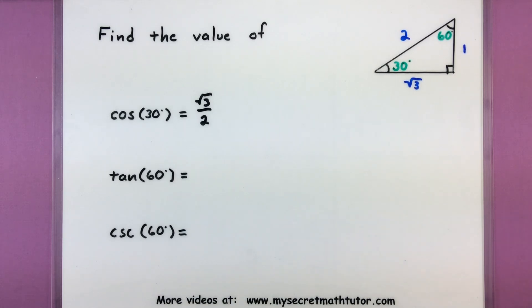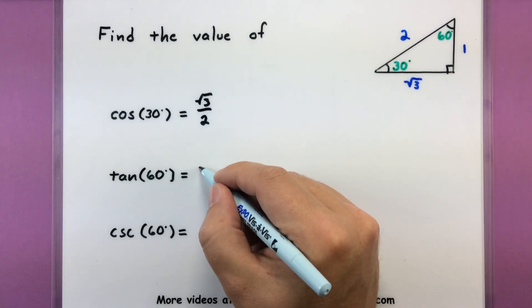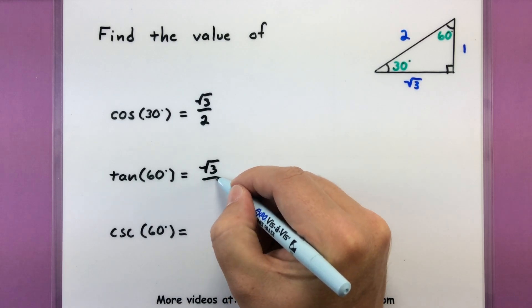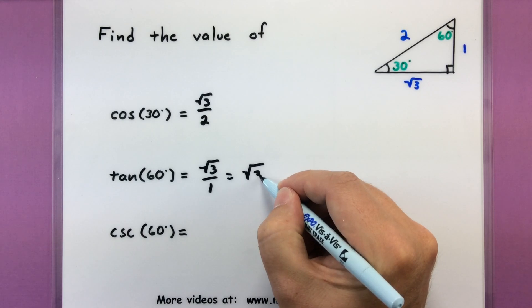If I want to figure out something like tangent of 60 degrees, now we're thinking about this top angle. So that's the opposite over the adjacent. So square root of 3 all over 1, or we can just simplify that to square root of 3.